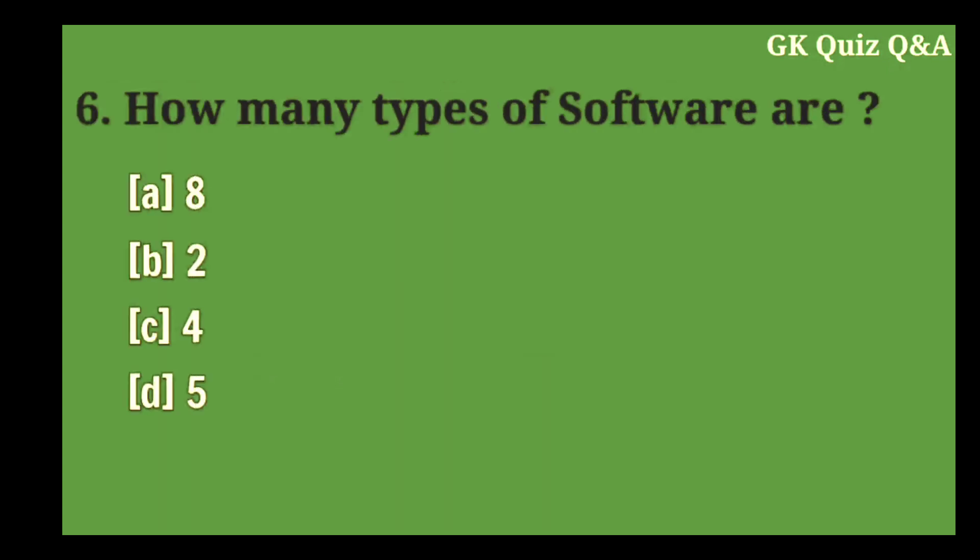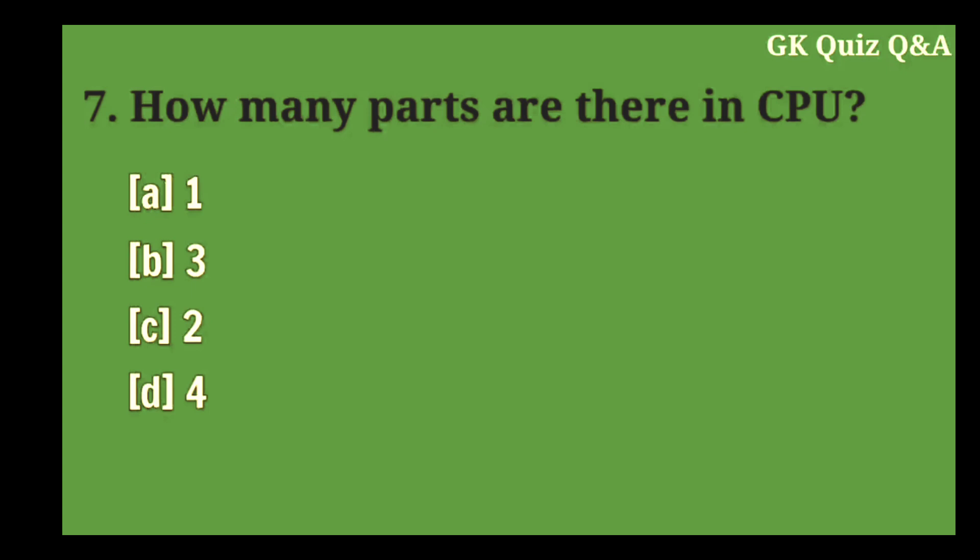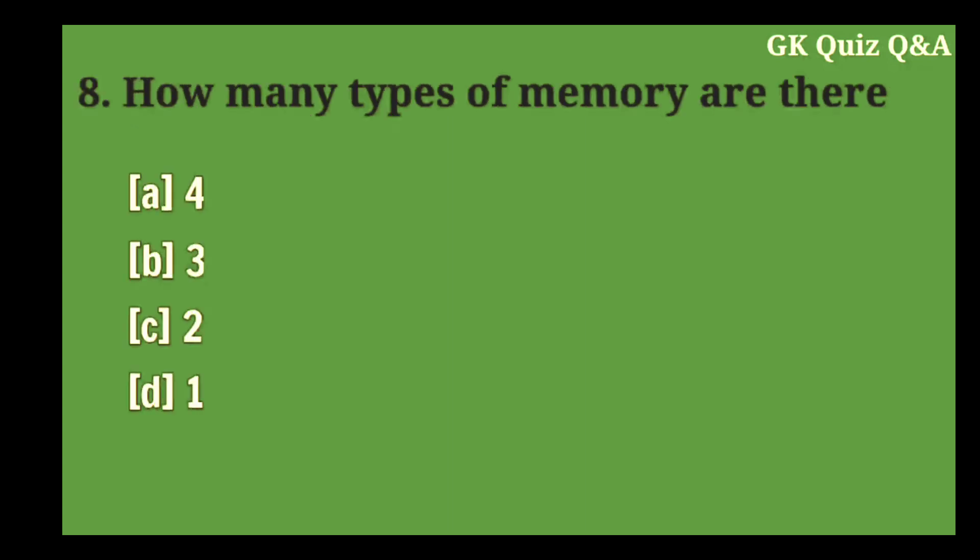Answer B: Two types. How many parts are there in CPU? Answer C: Two parts. How many types of memory are there?